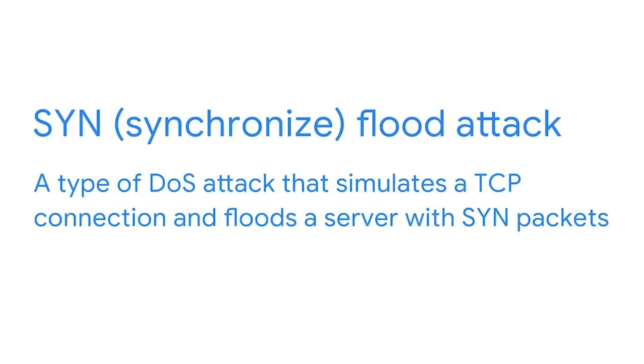An example is an attacker who crafted a very careful packet that caused a router to spend extra time processing the request. The overall traffic volume didn't overload the router — the specifics within the packet did. Now let's discuss network-level DOS attacks that target network bandwidth to slow traffic. The first is called a SYN flood attack. A SYN flood attack is a type of DOS attack that simulates the TCP connection and floods a server with SYN packets.